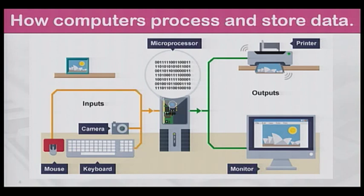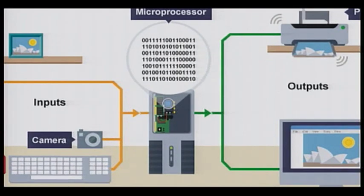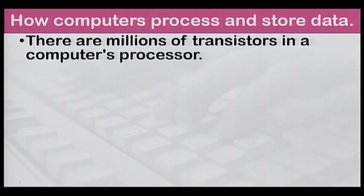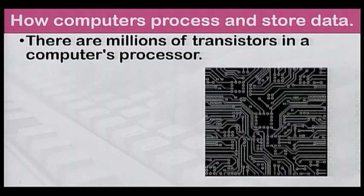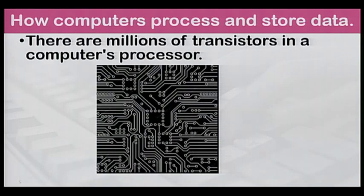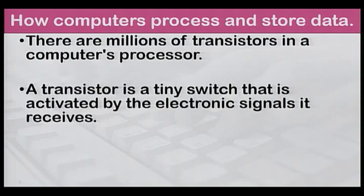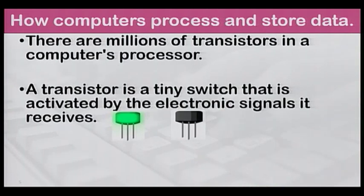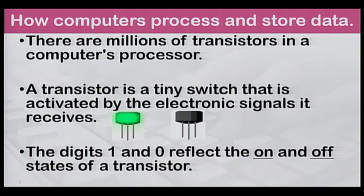Computers can only work with digital data. Before processing can take place, the data must be converted into digital signals which are represented by zeros and ones. There are millions of transistors in a computer's processor. A transistor is a tiny switch that is activated by the electronic signals it receives. It has two states: on and off. The digits 1 and 0 reflect the on and off states of a transistor.